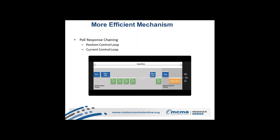Another efficiency feature is Poll Response Chaining. Rather than sending a poll request to every component individually, you can send one generic poll request and all those components respond with fixed time delays, which is programmable at startup. This allows you to load up your network even more efficiently without losing time on individual poll requests.